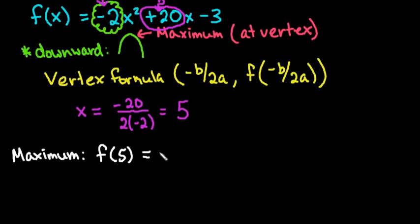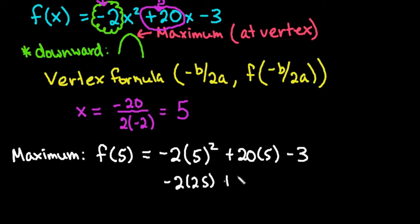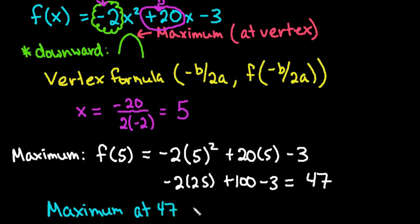So I'm going to replace all of my x values with 5. So x squared would become 5 squared plus 20 times 5 minus 3. If I simplify this I would have negative 2 times 25 plus 100 minus 3. So if we further simplify, this would be negative 50 plus 100, which is positive 50, and positive 50 minus 3 would be 47. So if it asks for the maximum value, you are looking for only the y-coordinate of the vertex. So the maximum is 47 when x equals 5.